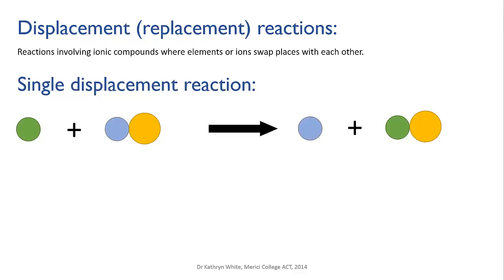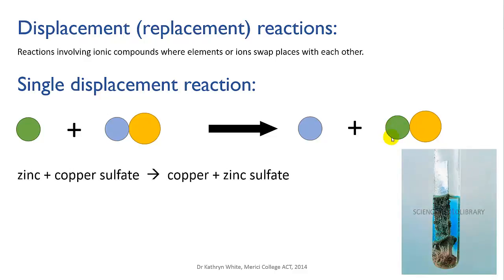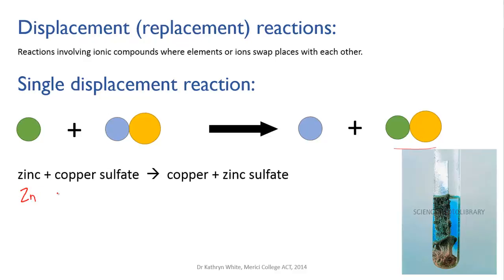In a single displacement reaction, one element is displaced from a compound by another one. You can see this represented in the diagram where the green circle kicks out the blue circle from the compound and takes its place. A commonly demonstrated example of this kind of reaction is that between zinc and copper sulfate.